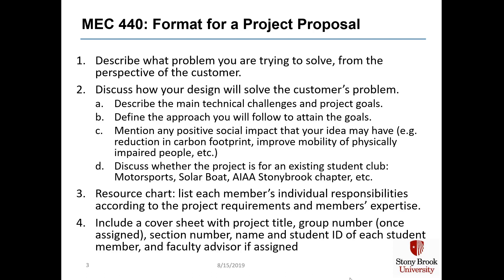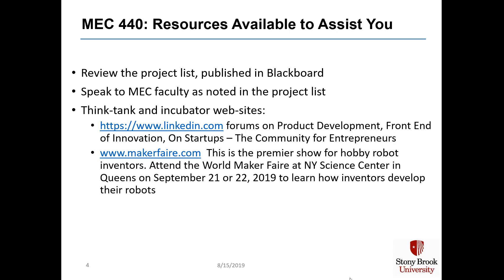This slide shows some available resources to help your team select a project. Your first and simplest choice is to select a project from our formal project list. You may speak to faculty as noted in the project list — specifically, faculty who have either thought of the idea to begin with, have advised numerous student groups on this idea in the past, or some combination of the two. A couple of incubator websites are noted. For any group interested in working on a robotics project, you might want to attend the upcoming World Maker Fair. I went to a recent fair and it was well worth the visit — you get to speak to inventors and learn how they build robots on display. Good luck to you!